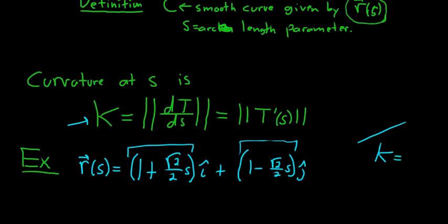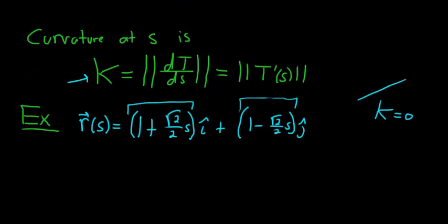So the curvature in this problem should be equal to 0. The curvature of a line in general is always 0. Let's go ahead and work it out though, to verify. Solution.